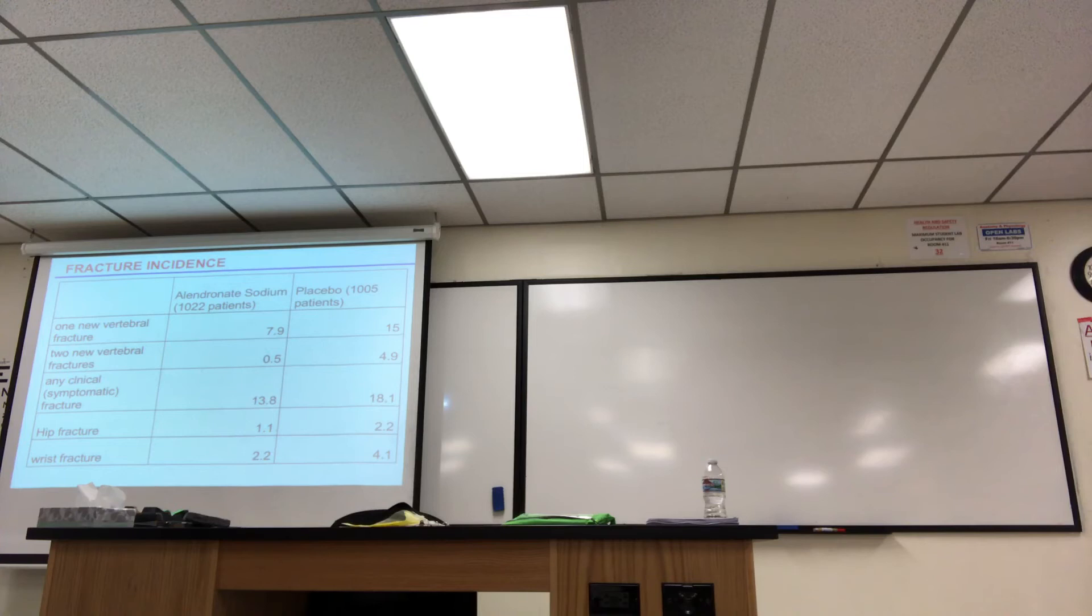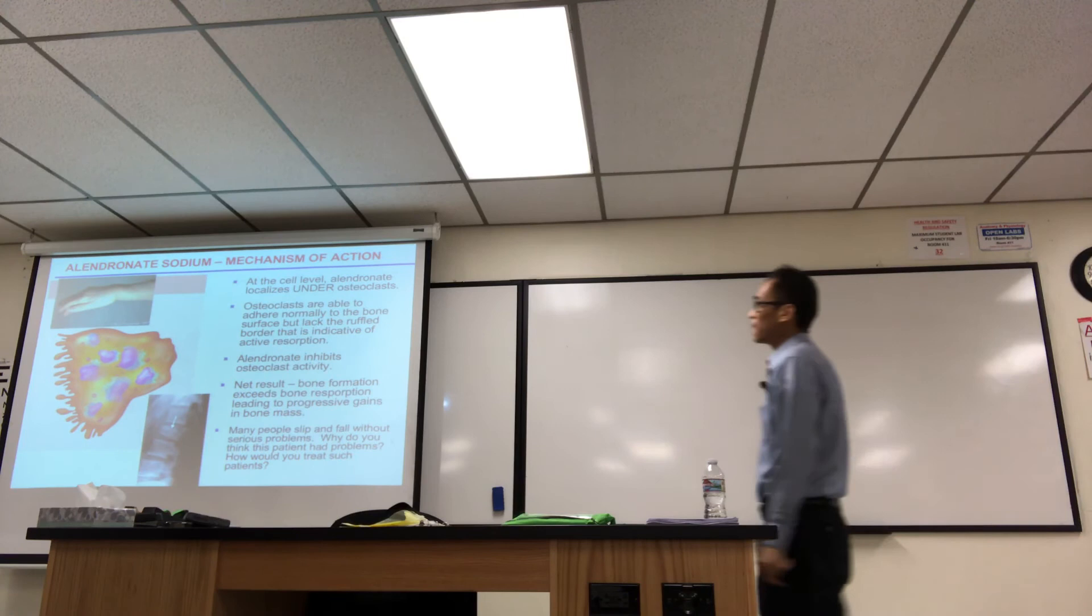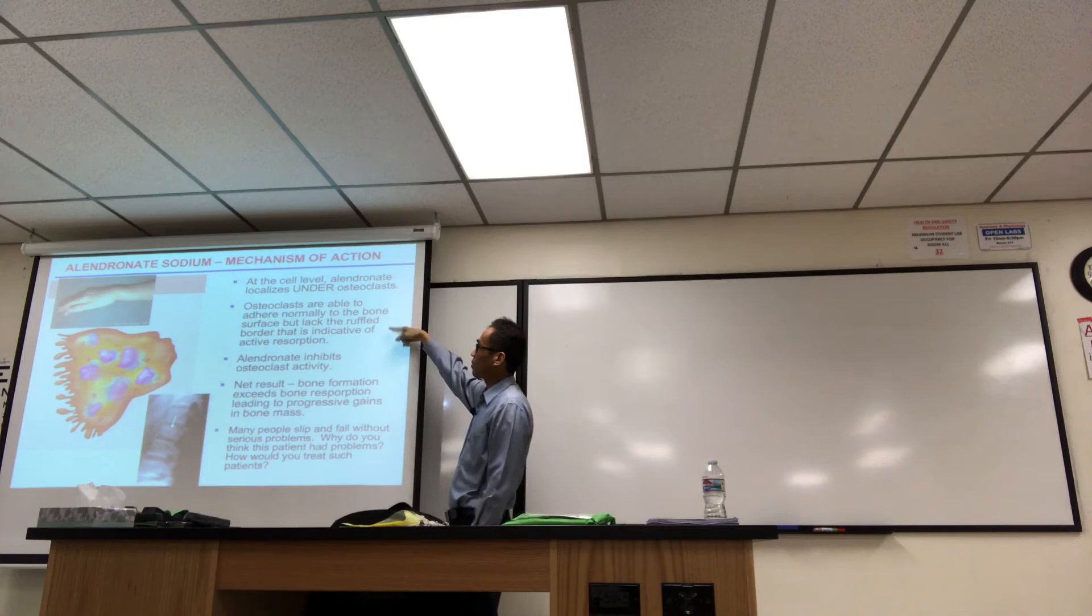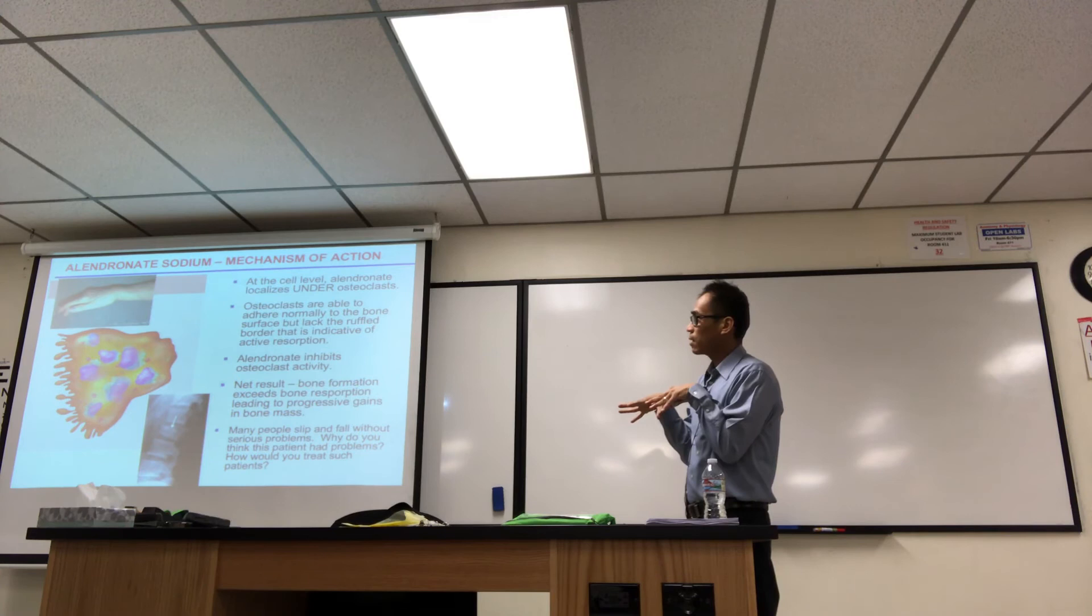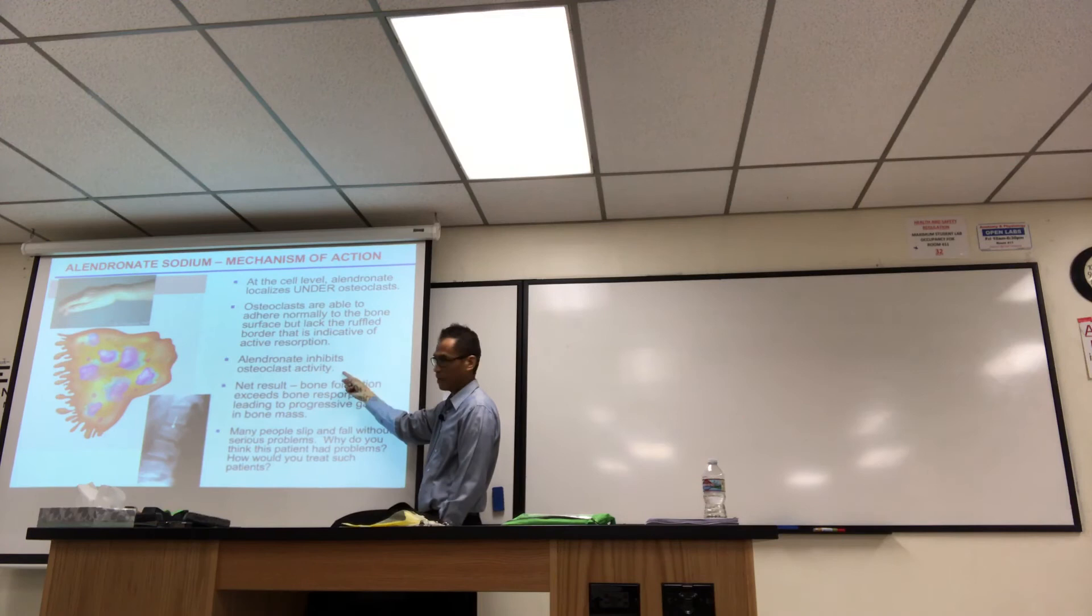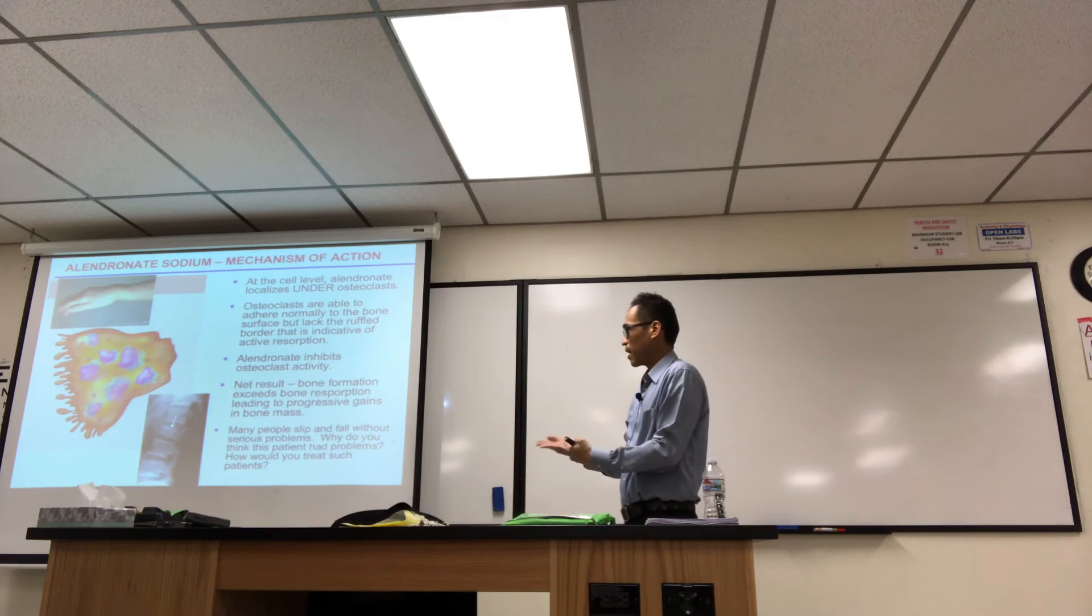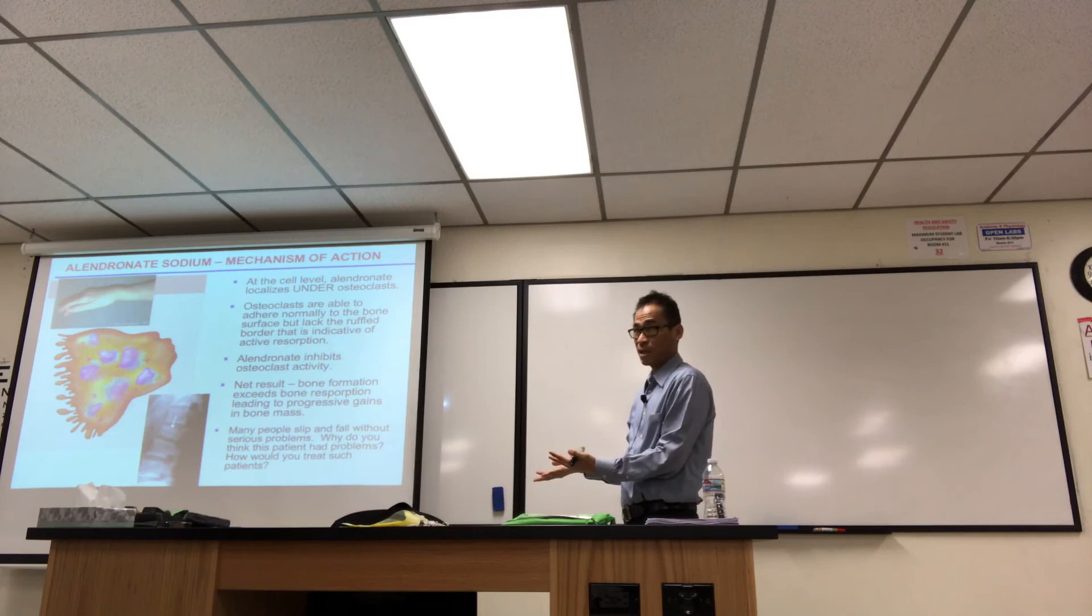And so this is my last slide. It's just kind of, like, going back. I don't know if you remember I asked you this at the very beginning of the bone talk. So now that we know something about, say, this drug, at the cell level, basically, this drug localizes under the osteoclast. Osteoclasts are able to adhere normally to the bone, right? But they lack those ruffled edges at the border. Okay? And that indicates active resorption. So when they lack that, they think that this drug is inhibiting that cell activity. The net result is bone formation exceeds bone desorption, leading to more bone mass. And many people slip and fall without serious problems. You know, why do you think this patient had problems? How would you treat such patients? Remember, I kind of asked you that question at the beginning of lecture, so I kind of wanted to put it at the end there.